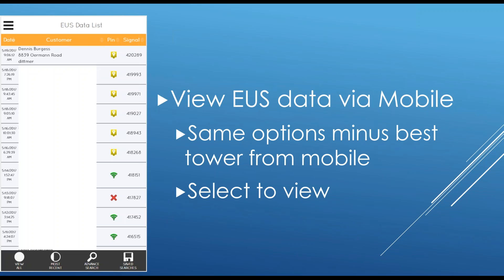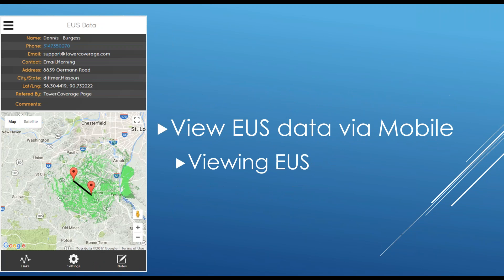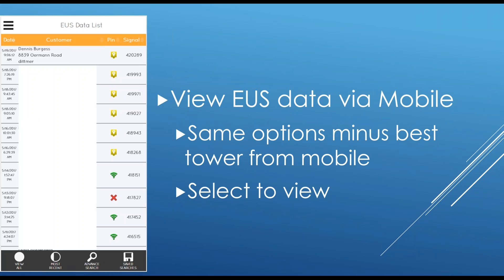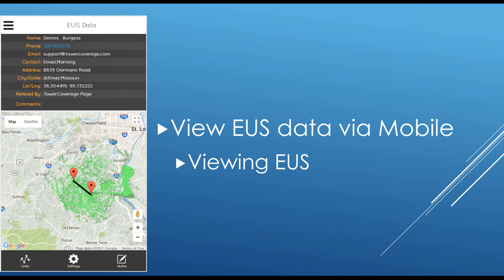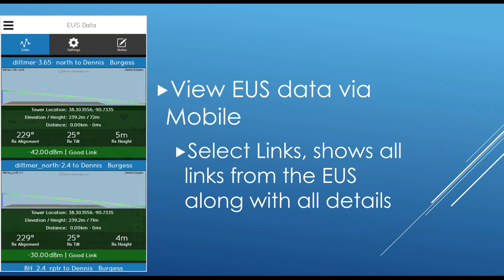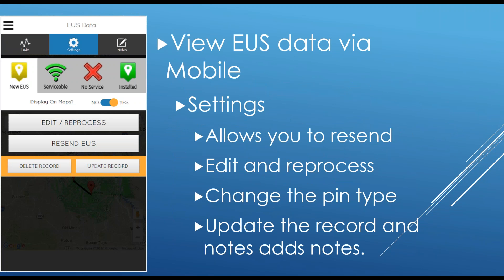To view EUS data on mobile, click EUS Data, get the data, and select which record you want. You have View All, Most Recent, and Advanced Search at the bottom. Note that Best Tower is not available on mobile — it's a complicated process not yet mobilized. Clicking on an EUS record shows you the data, and a Links button shows all path analysis results which you can scroll through. A Settings button lets you update the record, add notes, mark as serviceable, and edit and reprocess.